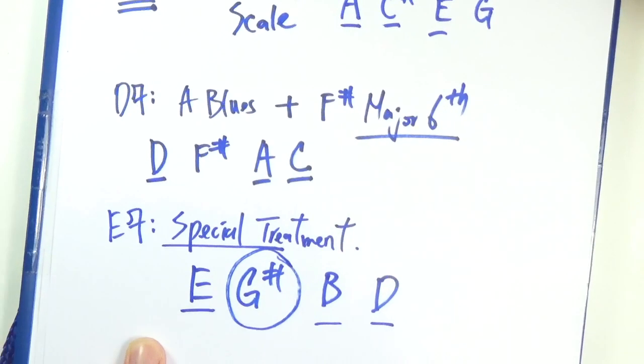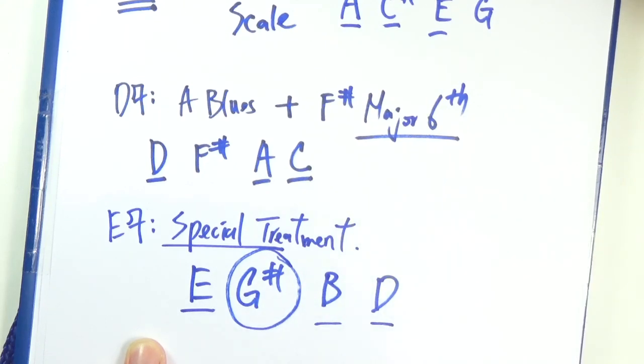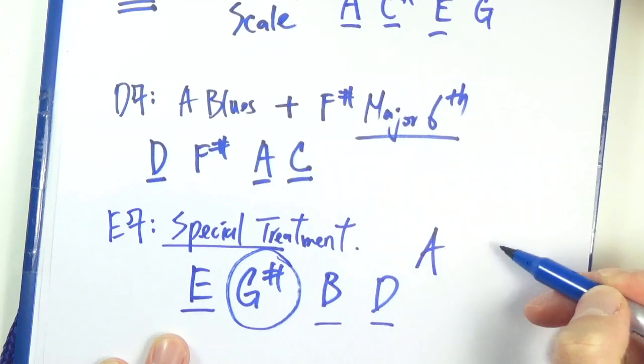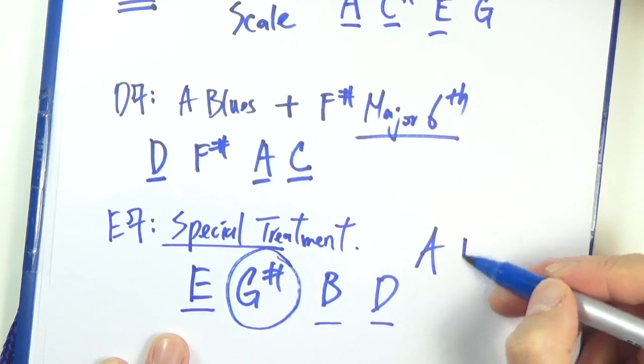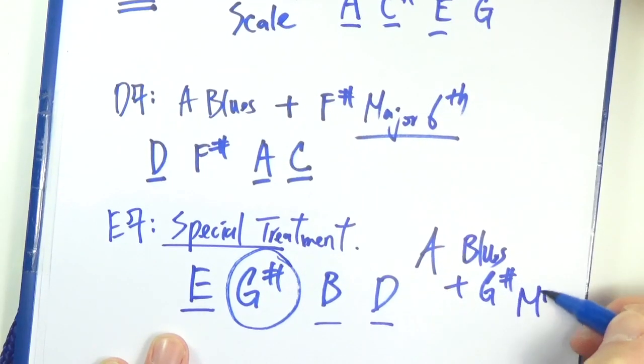So either we can brute force add the G sharp to the scale. So A, for example, A blues plus G sharp. So that's major 7.